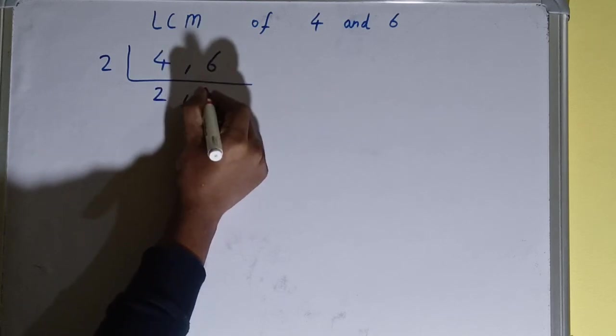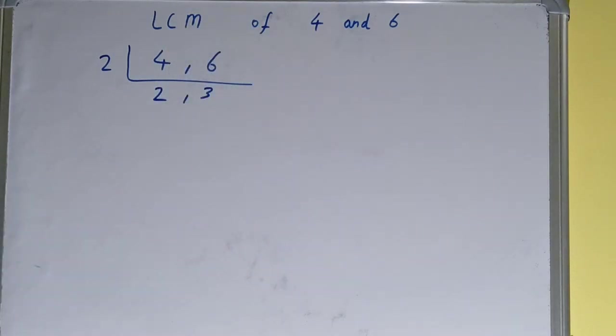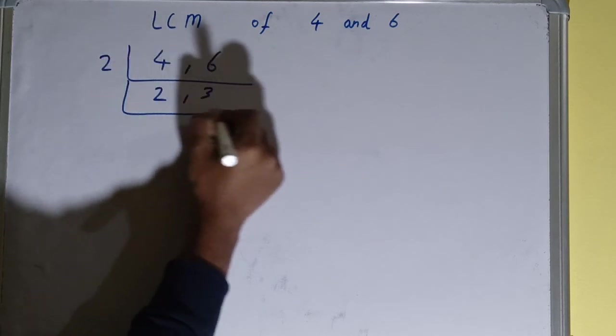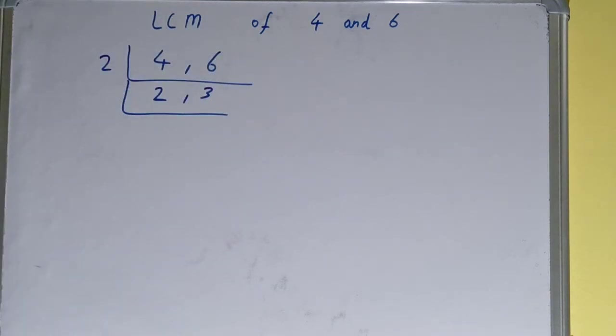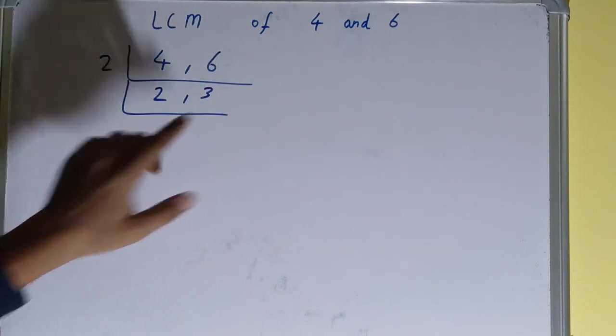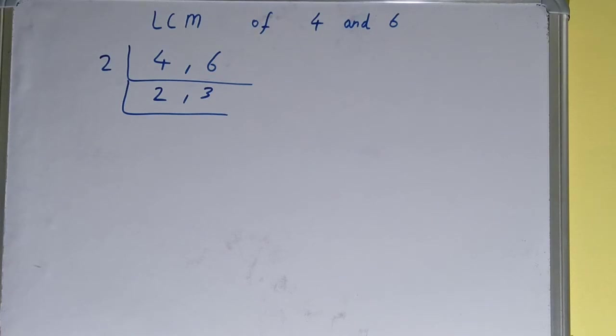And we'll get 3 over here. Okay, now again repeat the same process. Check if any of the number is divisible by 2. This one is divisible but not this one, right? So even if one of the number is divisible, we divide.